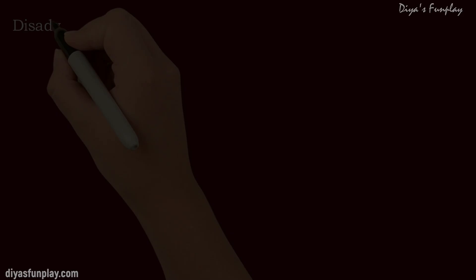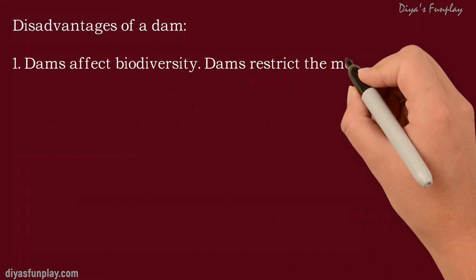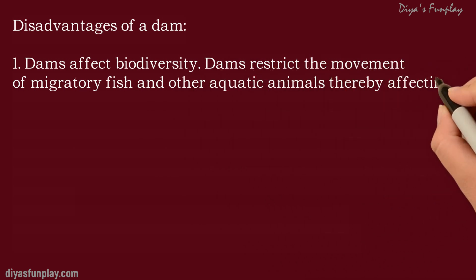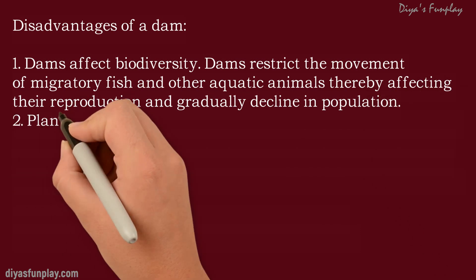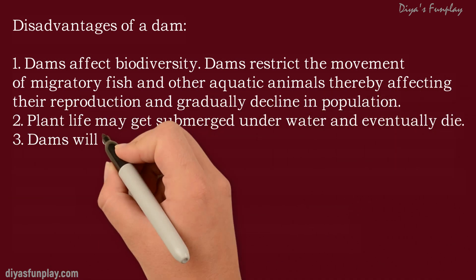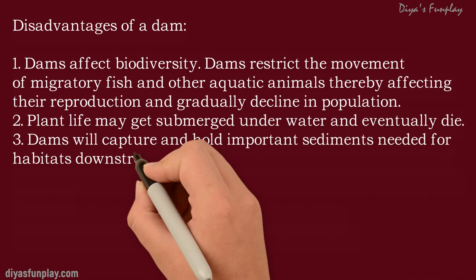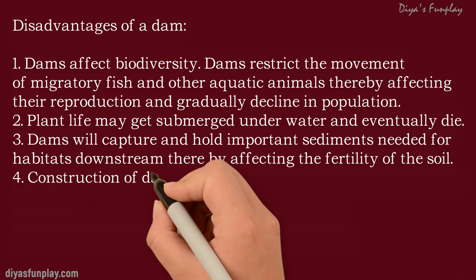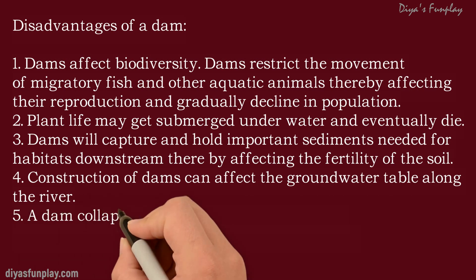Though there are many advantages of constructing a dam, they have some serious disadvantages too. Dams affect biodiversity. Dams restrict the movement of migratory fish and other aquatic animals thereby affecting their reproduction and gradually causing a decline in population. Plant life may get submerged underwater and eventually die.